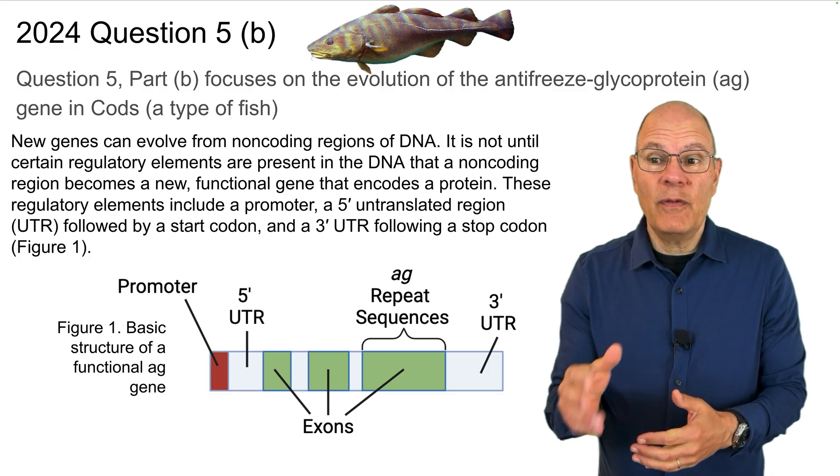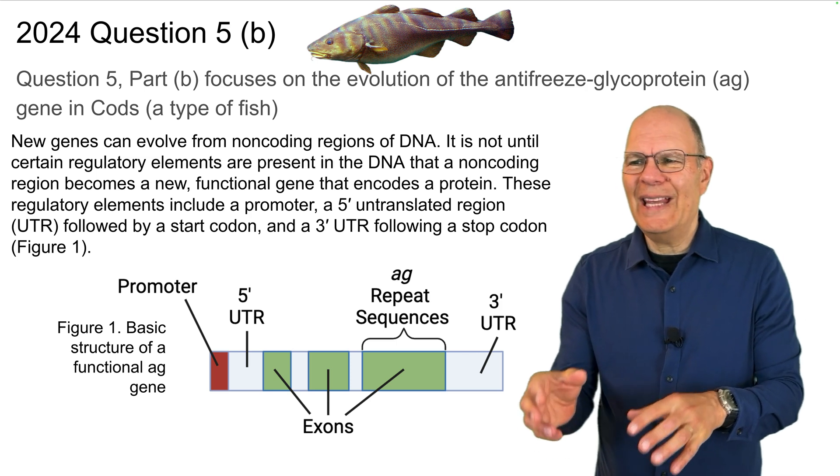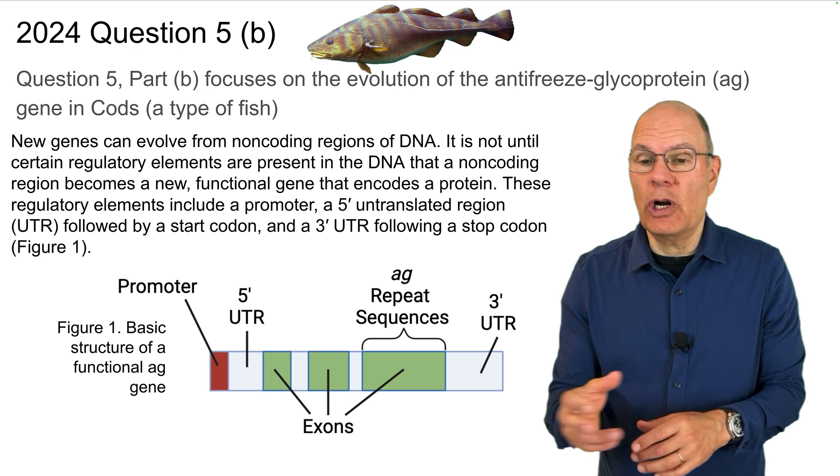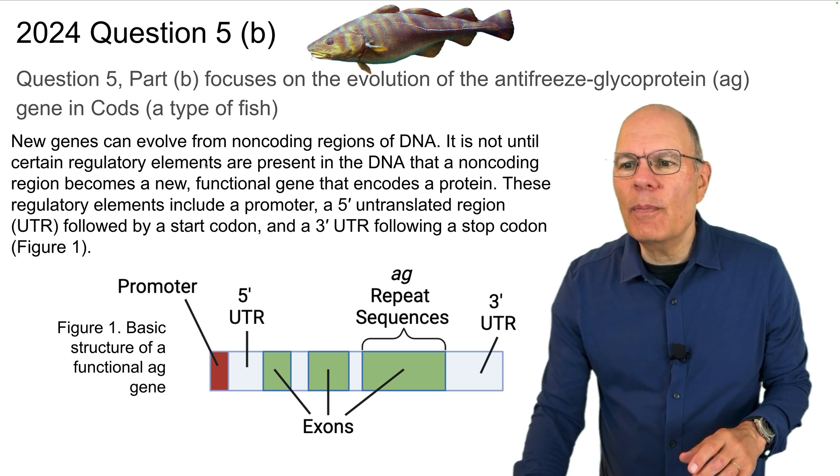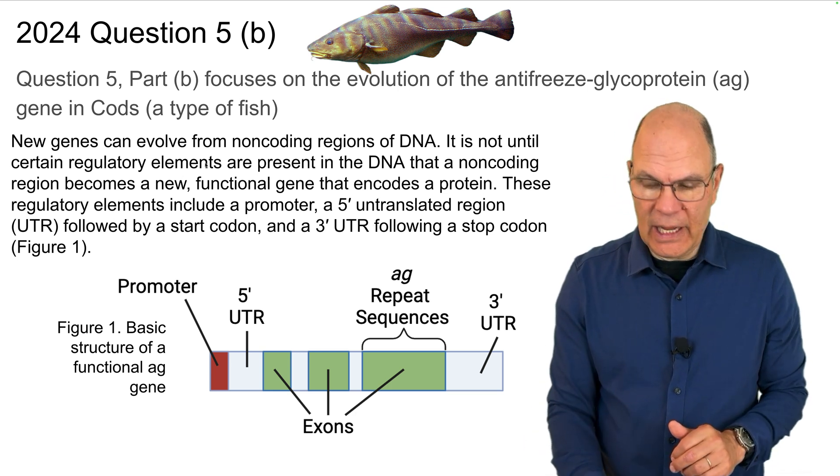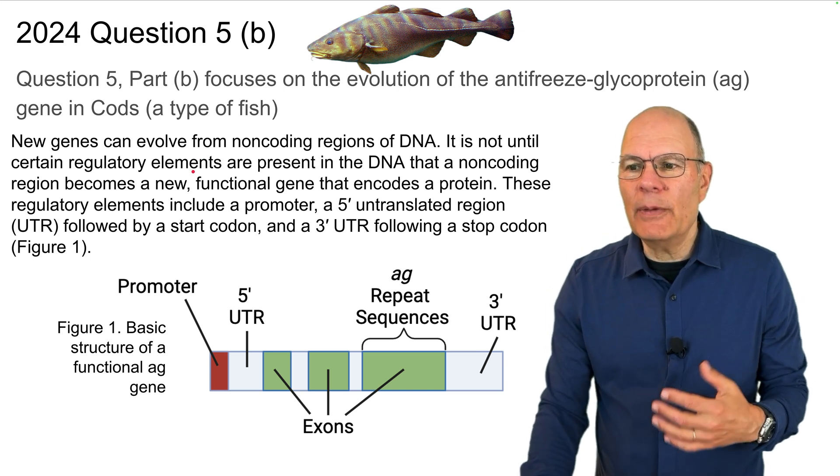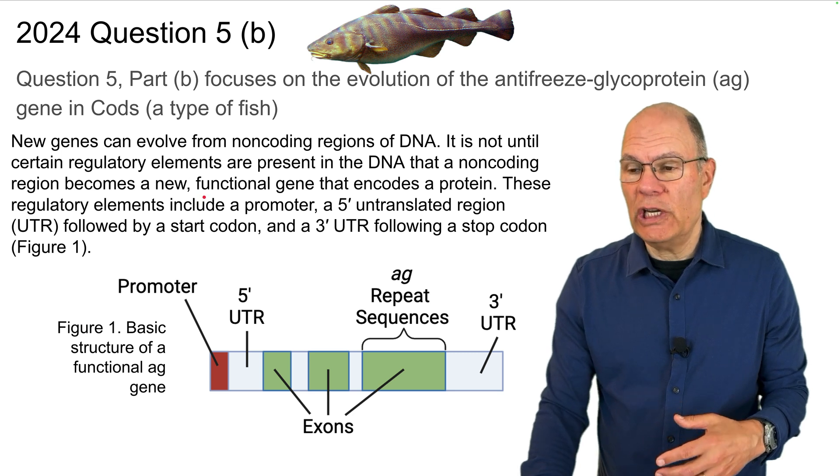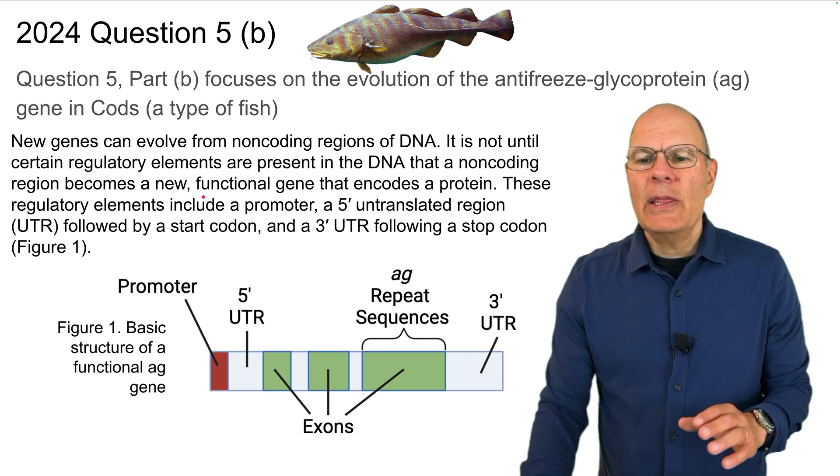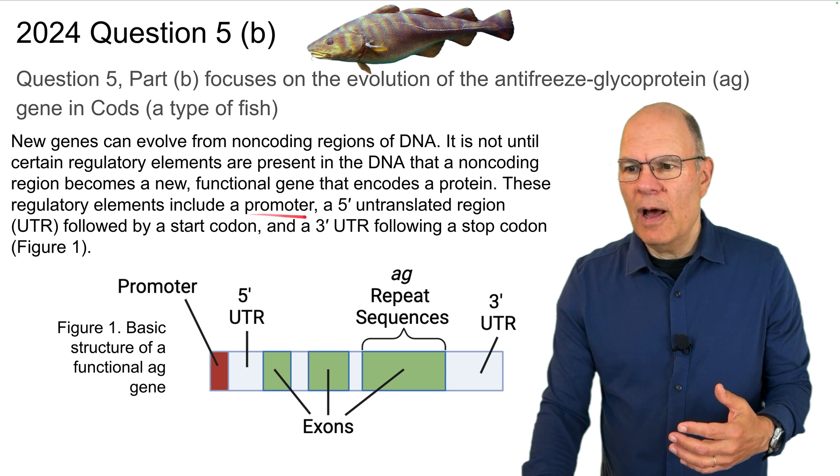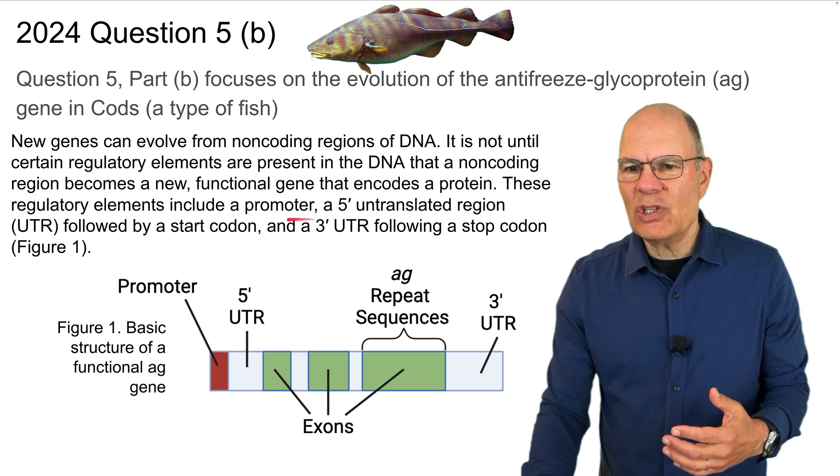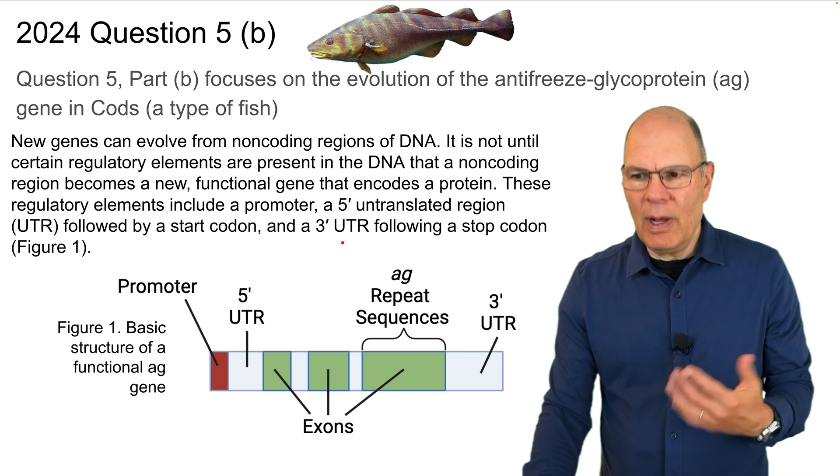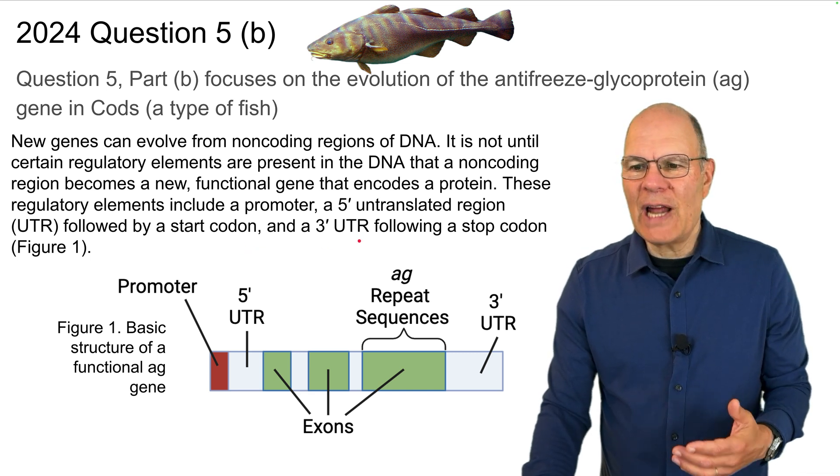Now we turn to question 5, part B, which focuses on the evolution of the antifreeze glycoprotein, AG gene in cods, which are a type of fish. New genes can evolve from non-coding regions of DNA. It is not until certain regulatory elements are present in the DNA that the non-coding region becomes a new functional gene that encodes a protein. These regulatory elements include a promoter, a 5' untranslated UTR, followed by a start codon, and a 3' untranslated region, UTR, following a stop codon.